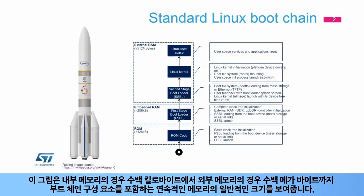This figure shows the typical sizes of the successive memories embedding the boot chain components, from a few hundred kilobytes for the internal memories, up to several hundred megabytes for the external memories.